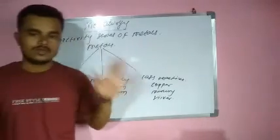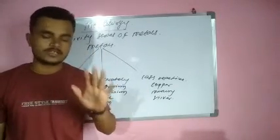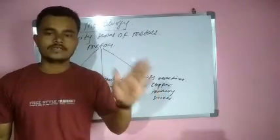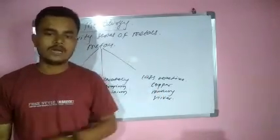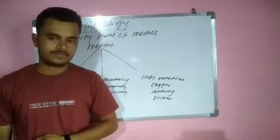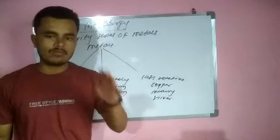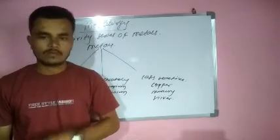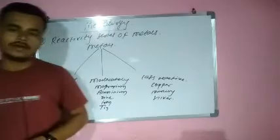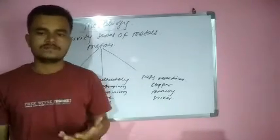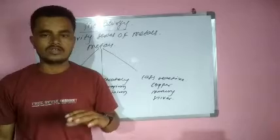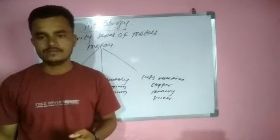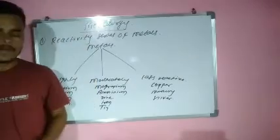This question is very important for you. At the end of the year this question was asked for 4 marks last year. You will be asked to identify the highly reactive, moderately reactive, and less reactive metals. A diagram will be given and you need to identify the metals accordingly. These are the reactivity series of metals.